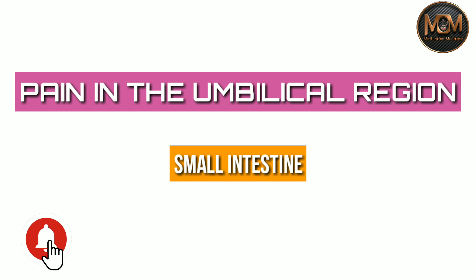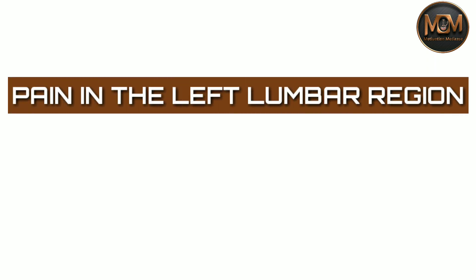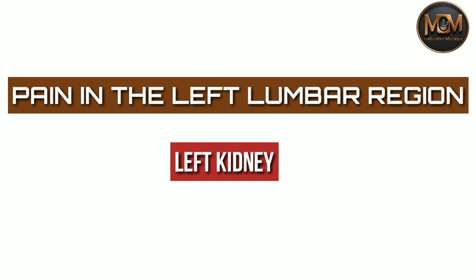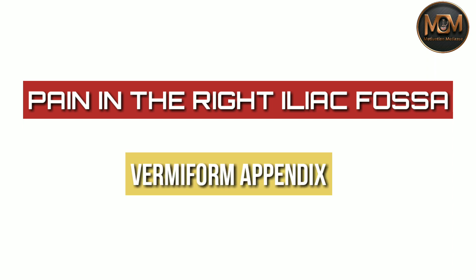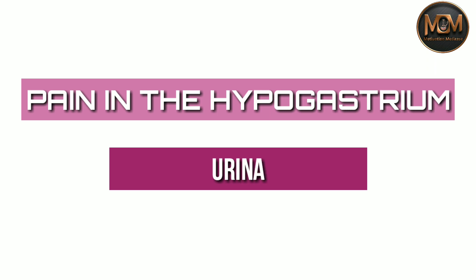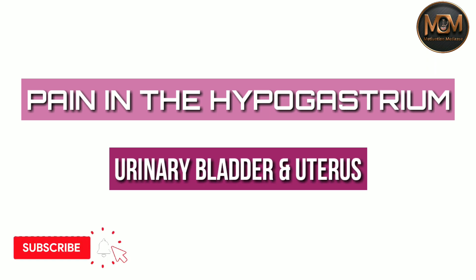When you feel pain in the left lumbar region, it means it is coming from the left kidney. Pain in the right iliac fossa comes from the vermiform appendix. For the hypogastrium, pain in this region comes from the urinary bladder and the uterus as well.